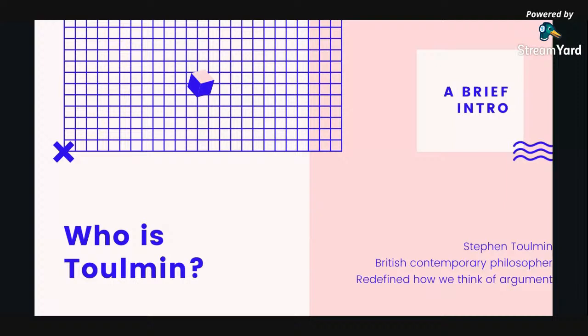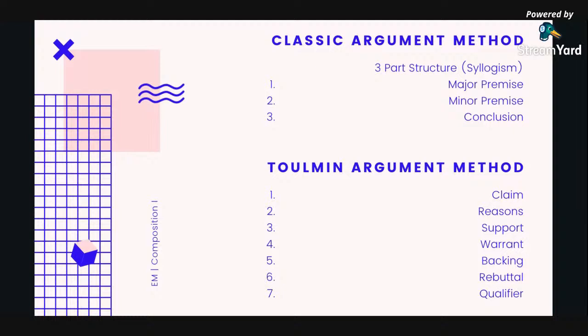Who is Tolman? It's actually a man's last name — Stephen Tolman. He was a British contemporary philosopher, and he redefined how we think of argument. What you see on top is the classic argument method — a three-part structure that was typically used for a long period of time. Then Tolman had a different idea and came up with his own method for argument, which looks like the bottom where you have those seven different pieces.